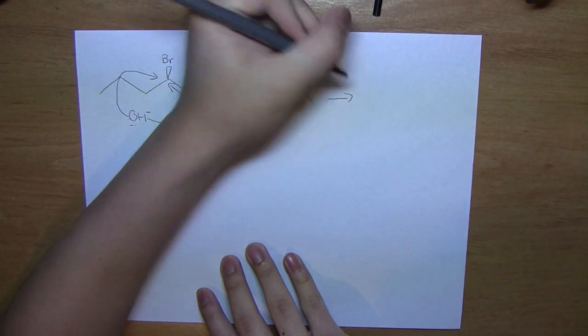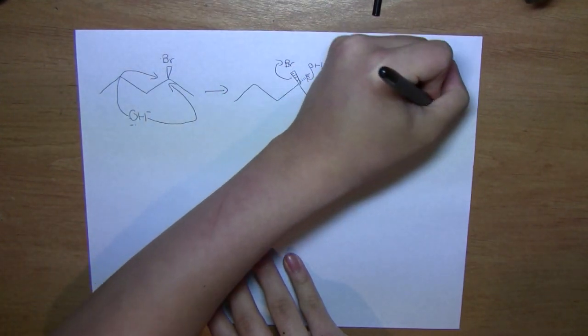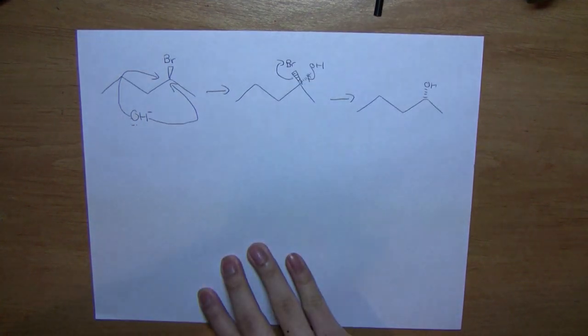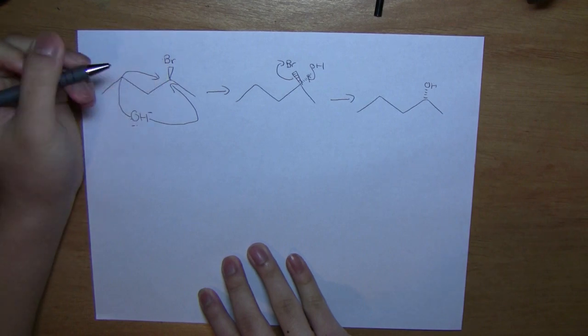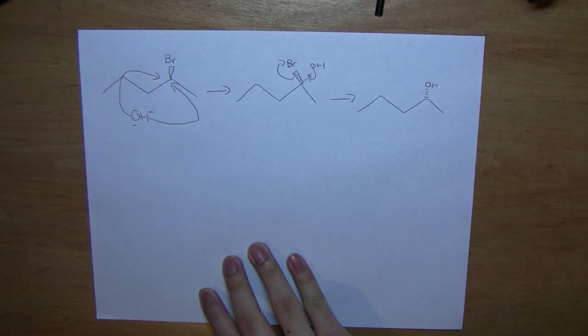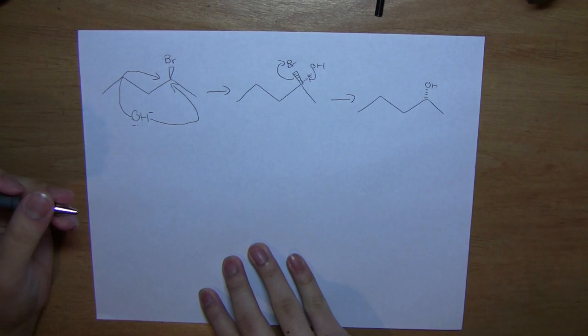So the final product we get is this. And this is the only product we get because we cannot have it attack from the front side as stated previously. Now, why can't we have SN2 reactions happen on a tertiary carbon?